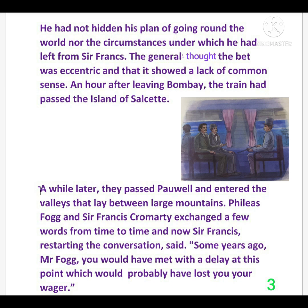After leaving Bombay, the train had passed the island of Salsette. Phileas Fogg did not hide his plan from Sir Francis — he told him everything. The general thought the bet was unusual. An hour later, leaving Bombay, the train passed the island of Salsette, and then passed Powell, entering the valleys that lay between large mountains. Phileas Fogg and Sir Francis Cromarty exchanged a few words from time to time, having conversation among them.